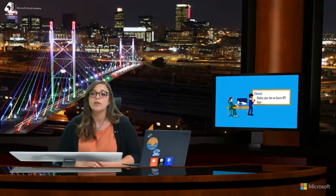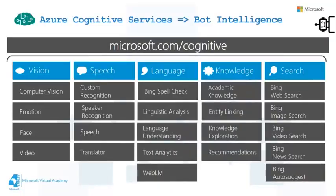Now let's look at bot intelligence, which means talking about Azure Cognitive Services. Azure Cognitive Services is a set of services that falls under five categories: vision, speech, language, knowledge, and search. Many of these services can be consumed from a bot to add bot intelligence. For example, we'll be using the Language Understanding Intelligence Service, which is the LUIS API. We may also use Bing Spell Check, which checks spelling of a sentence and returns JSON with the right suggested sentence. Let's take a quick tour of Azure Cognitive Services and then focus on LUIS.